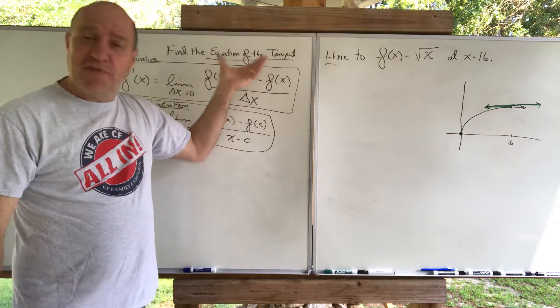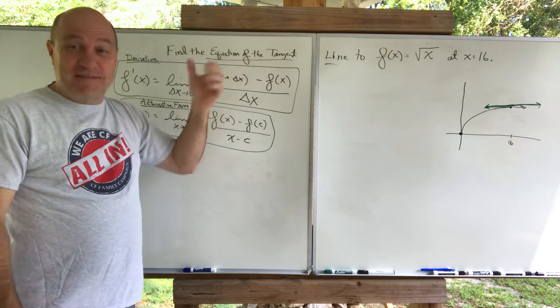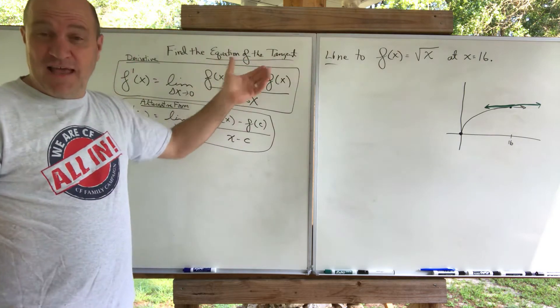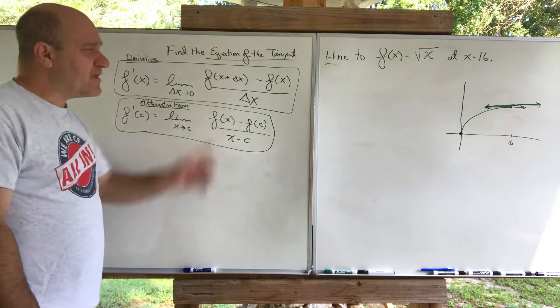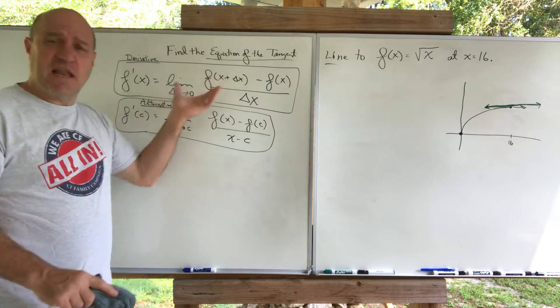So we want the equation of the tangent line. That means I need the equation of a line, I need the slope. The slope of the tangent line is the derivative. The equation of the tangent line is not the derivative. The slope of the tangent line is the derivative.